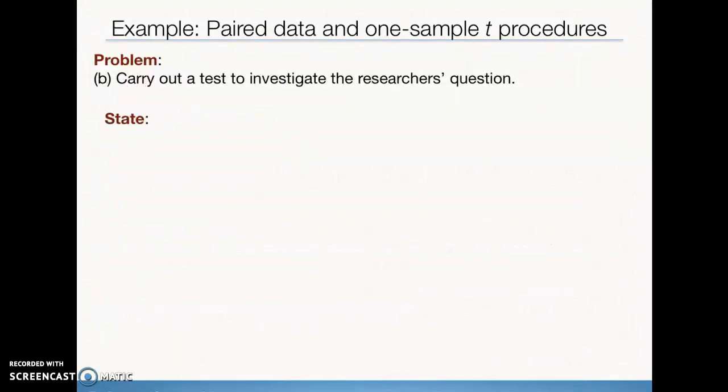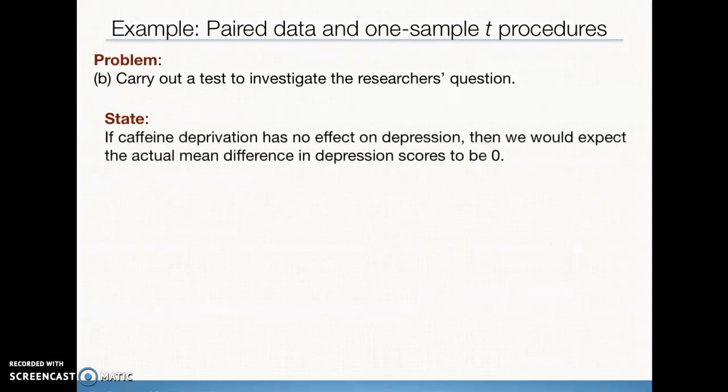Let's see what the test is going to look like. For state, if caffeine deprivation has no effect on depression, then we would expect the actual mean difference in depression scores to be zero. So how are we actually going to put that in our hypothesis? Well, we're going to create a mu sub d or population mean of the difference. And if there's no difference, which is going to be our status quo hypothesis, our null hypothesis, then if there's no difference, then that means the difference is zero.